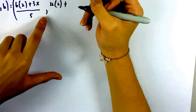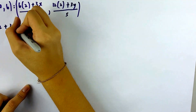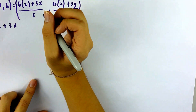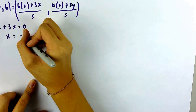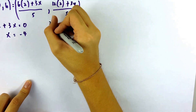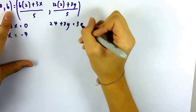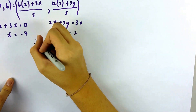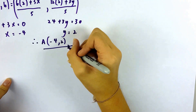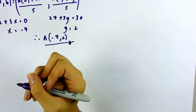This is the x-coordinate and this is the y-coordinate. Setting up the equation: 3X on one side equals the other side, so X equals negative 4. This is the x-coordinate of point A. Then 24 plus 3Y equals 5 times 6, which is 30, and Y equals 2. Therefore, the coordinates of A are (negative 4, 2). This is the answer for part (i).